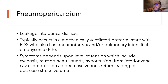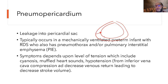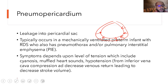Pneumopericardium is a true emergency — air leaking into the pericardial sac. It typically occurs in premature infants on mechanical ventilation who develop respiratory distress. It may occur as an isolated finding or as part of pneumomediastinum, pneumothorax, or pulmonary interstitial emphysema. Be aware of cardiac tamponade symptoms: when the heart is completely compressed, the baby will develop cardiogenic shock-like symptoms.